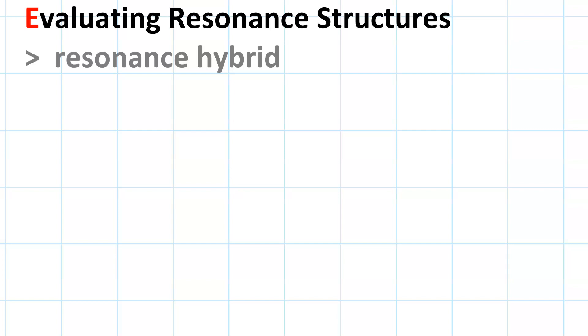Now let's talk about evaluating resonance structures for stability. The resonance hybrid is the weighted average of the resonance structures. What do we mean by weighted average? We mean that the most stable resonance structure contributes the most strongly.